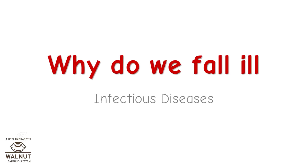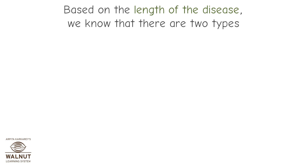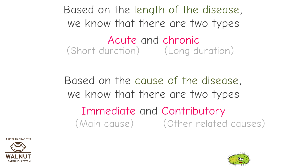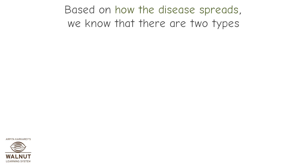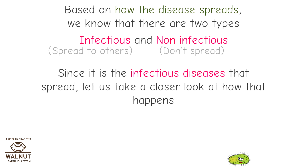Why do we fall ill? Infectious diseases can be classified in several ways. Based on duration, there are two types: acute (short duration) and chronic (long duration). Based on cause, there are two types: immediate (main cause) and contributory (other related causes). Based on how the disease spreads, there are two types: infectious, which spread to others, and non-infectious, which don't spread. Since it is infectious diseases that spread, let us take a closer look at how that happens.